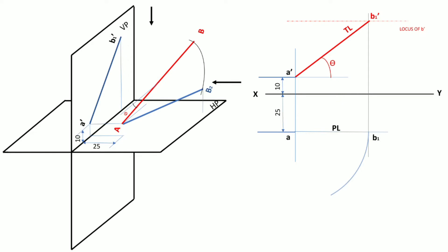Once we project line AB2 from the top view, the projection on the horizontal plane will again give us the true length in measurement, because the line is parallel to the horizontal plane. So with respect to the XY line, we measure angle phi in top view and draw line AB of the true length itself. Here we get the true length, and the point becomes point B2. Once we get point B2, we can draw the locus of point B. Wherever this locus meets the earlier arc drawn from the plan length, that point will become point B.